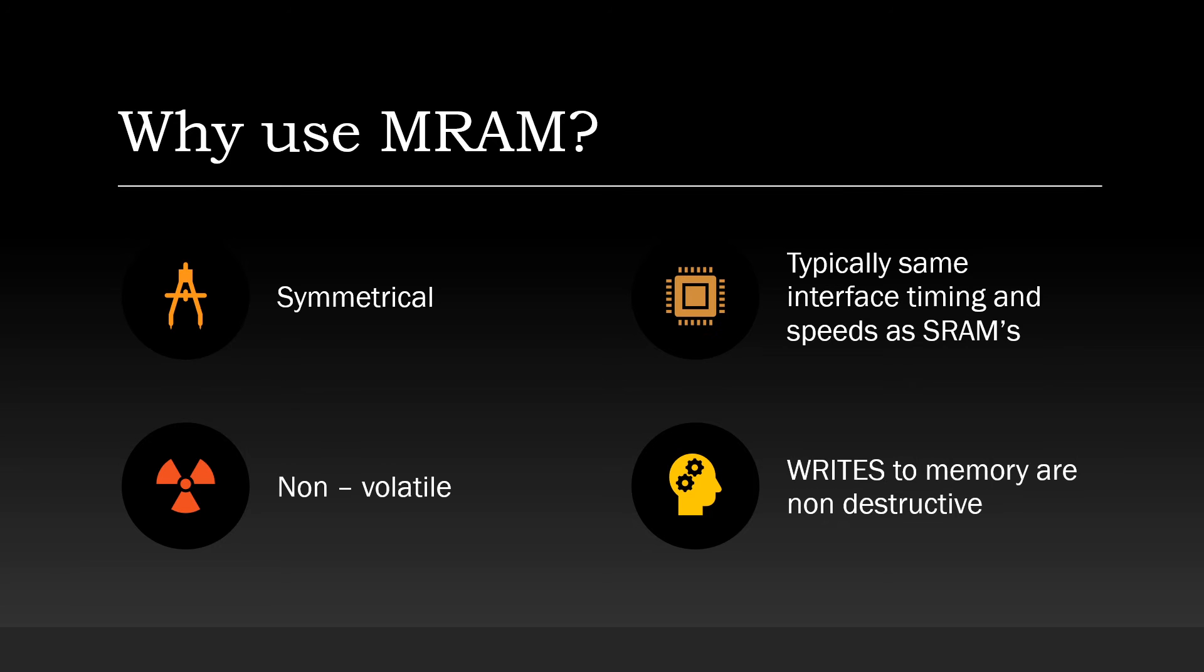So why use MRAM again? It's symmetrical in the sense we can read, write, dump around address location symmetrically. To put it in simple words, we can read a byte just as fast as we write a byte. And the interfacing timing and speeds are typically same as that of SRAMs. It's non-volatile, meaning the memory content is not lost when the power is off. And writes to the memory are non-destructive.